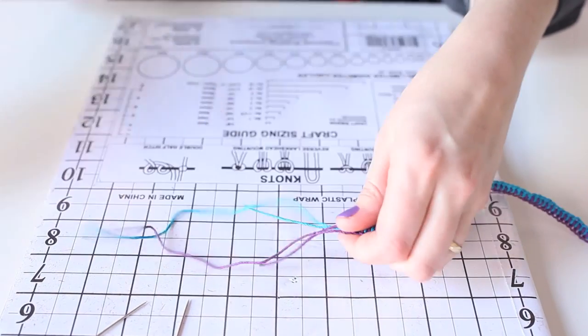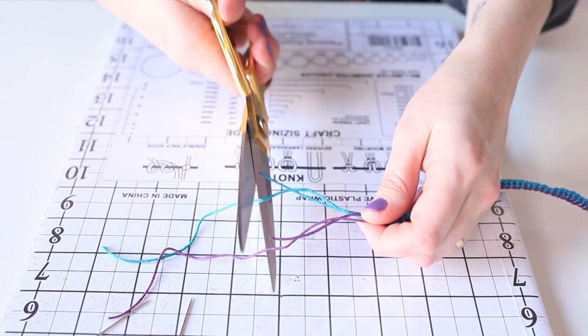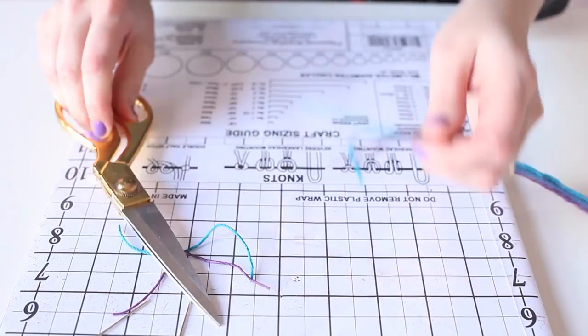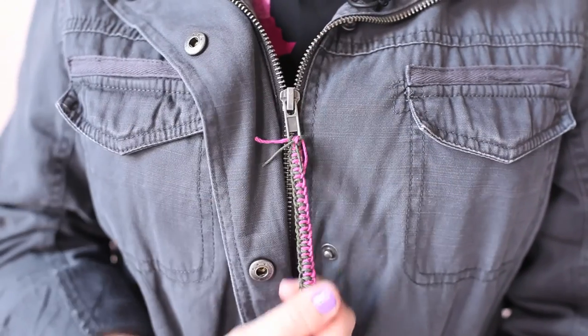And trim the extra tails of string that I don't need. So when you're all finished, you've got yourself a colorful bracelet. But if you don't want to quite commit to a full bracelet, you can also make yourself a nifty zipper pull.